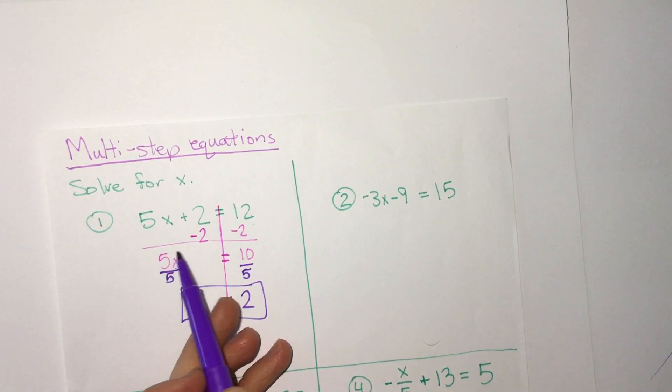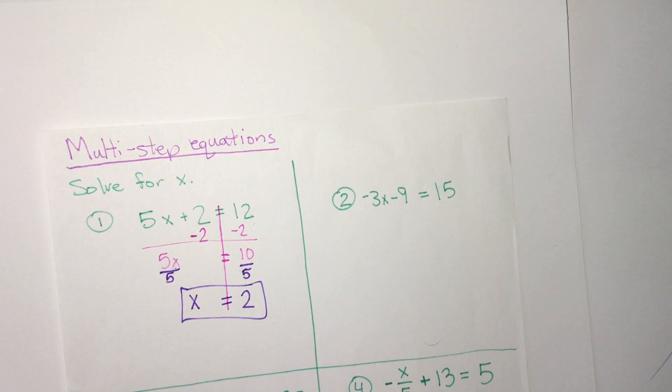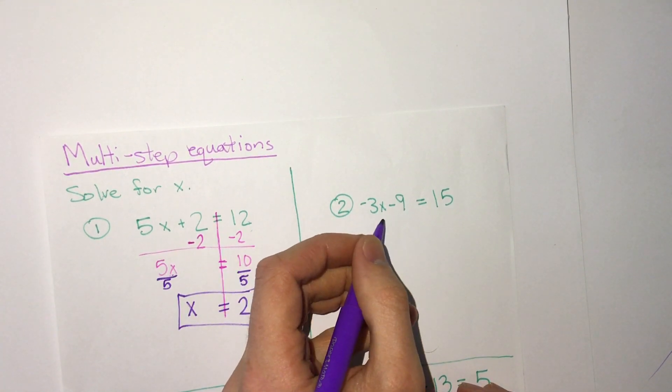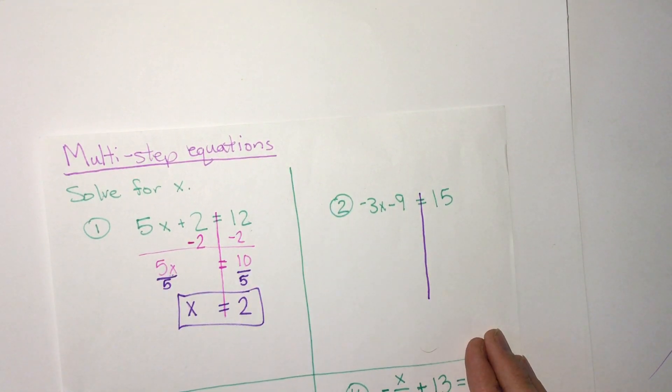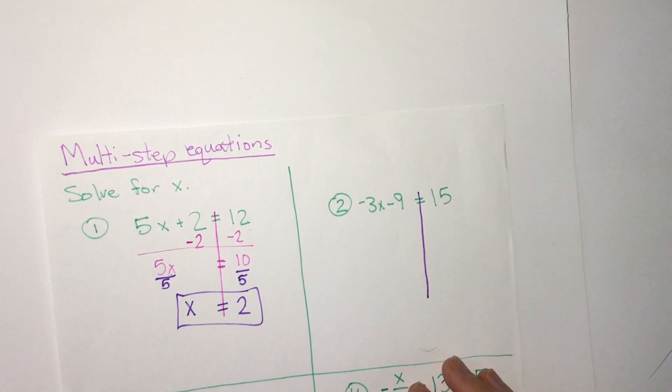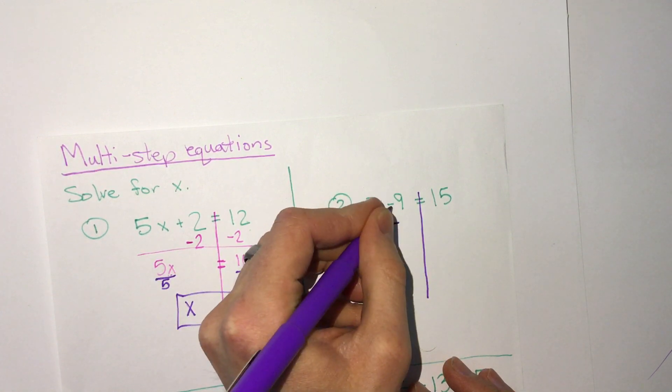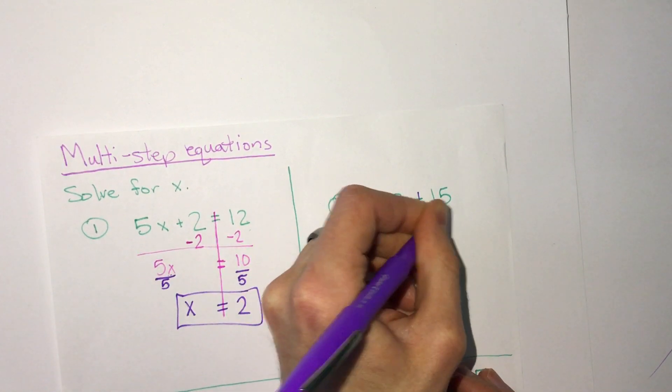So this one is very similar to this one, so if you want you could pause the video right now and try this on your own before we go over it. Okay, so now we're going to look at negative 3x minus 9 equals 15. So we'll put our equation bar here, doing the same thing on both sides. And 3x minus 9, we'll start with subtraction and addition, so the minus 9 we want to move over by doing plus 9.